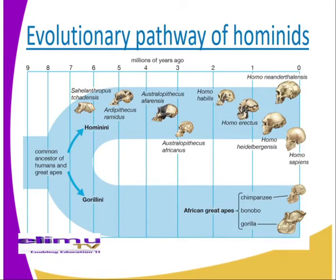The earliest primate to have evolved is the Proconsul, which lived about 20 million years ago in Africa and later spread to Asia, as you can see from our diagrammatic presentation on our screen. It is supposed to have given rise to two divergent lines — that is the pongidae and the hominidae. The pongidae then gave rise to the present-day anthropoid apes, while the hominidae gave rise to the human species.